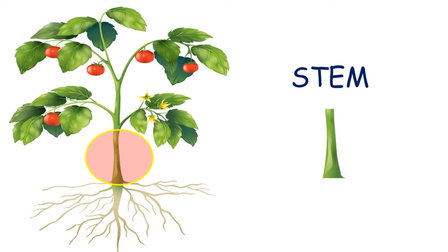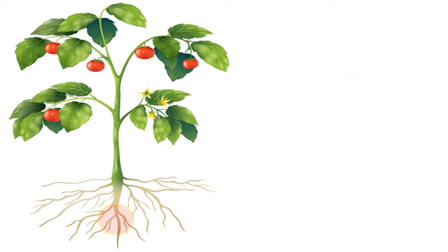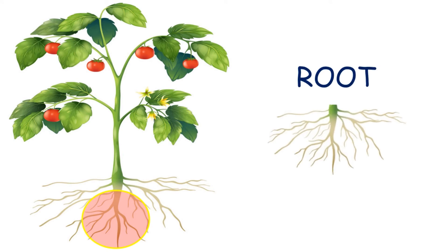The stem is strong and helps to hold the plant up. It supports the plant and contains thin tubes for carrying food, minerals, and water through the plant. Roots absorb water and minerals from the soil and hold the plant in the ground so it does not fall over.